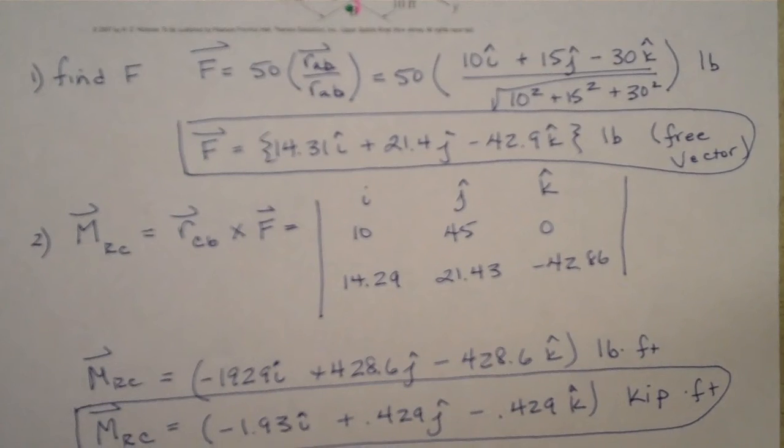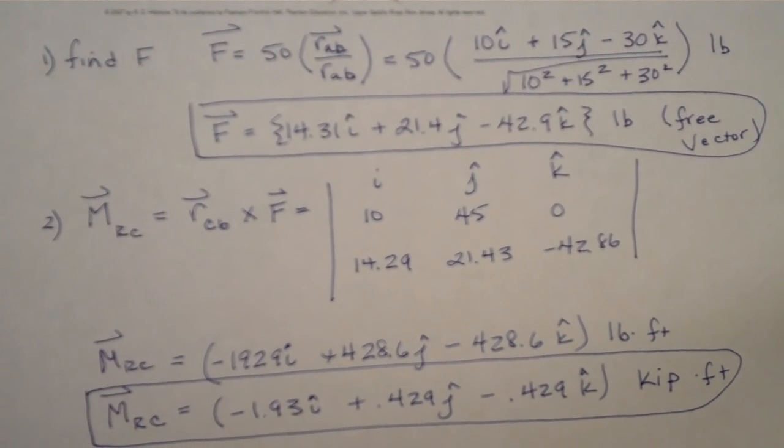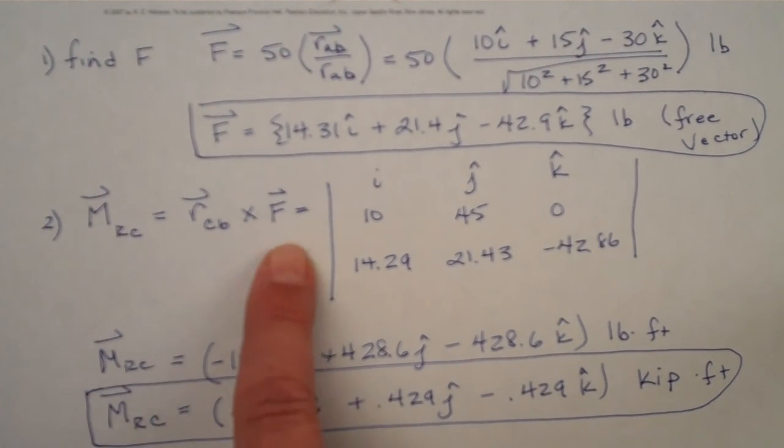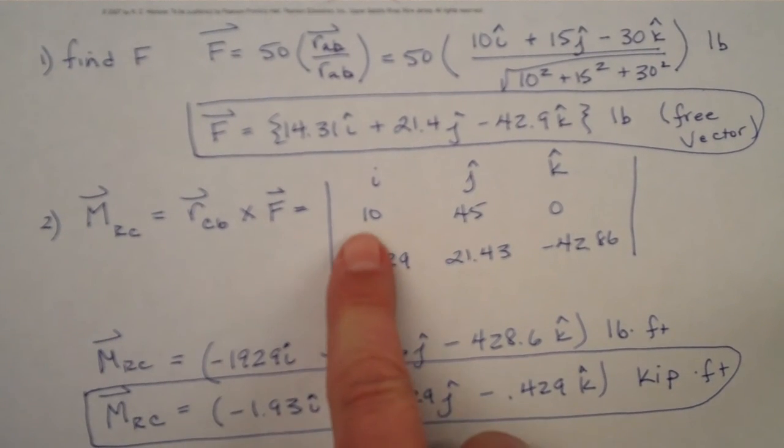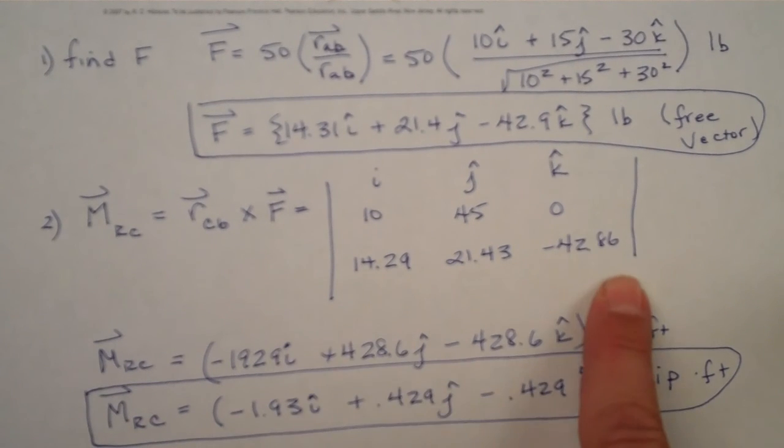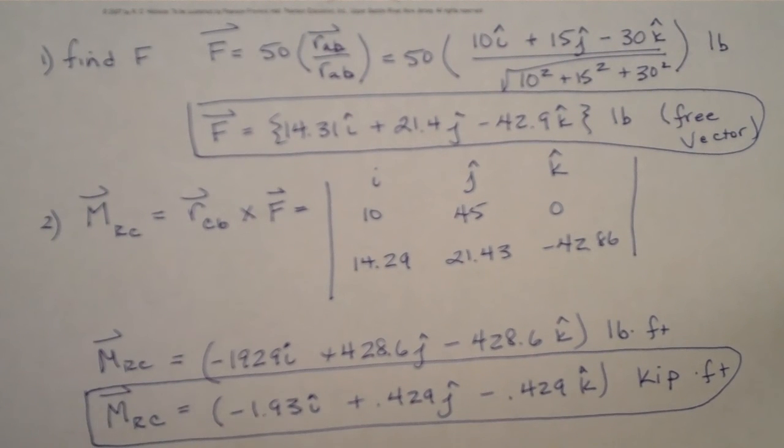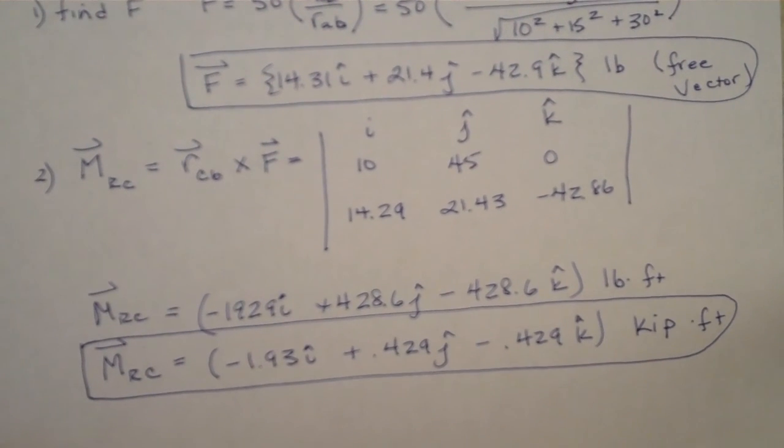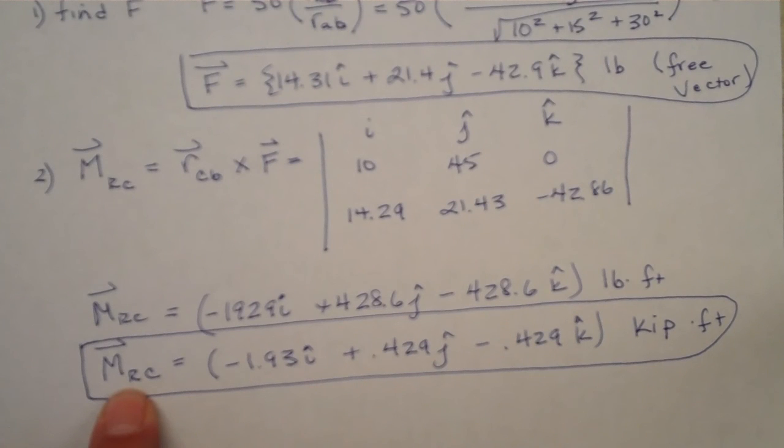So when we put that into our equation for finding a moment, it's always going to be the line from our pivot point out to the line of force, and we want to do a cross product of that. So there's the position vector C to B, and our force vector, and then we take the cross product and find what our moment is, and this tells us it's the resultant moment about point C, so that gives us the equivalent force and couple moment at point C.